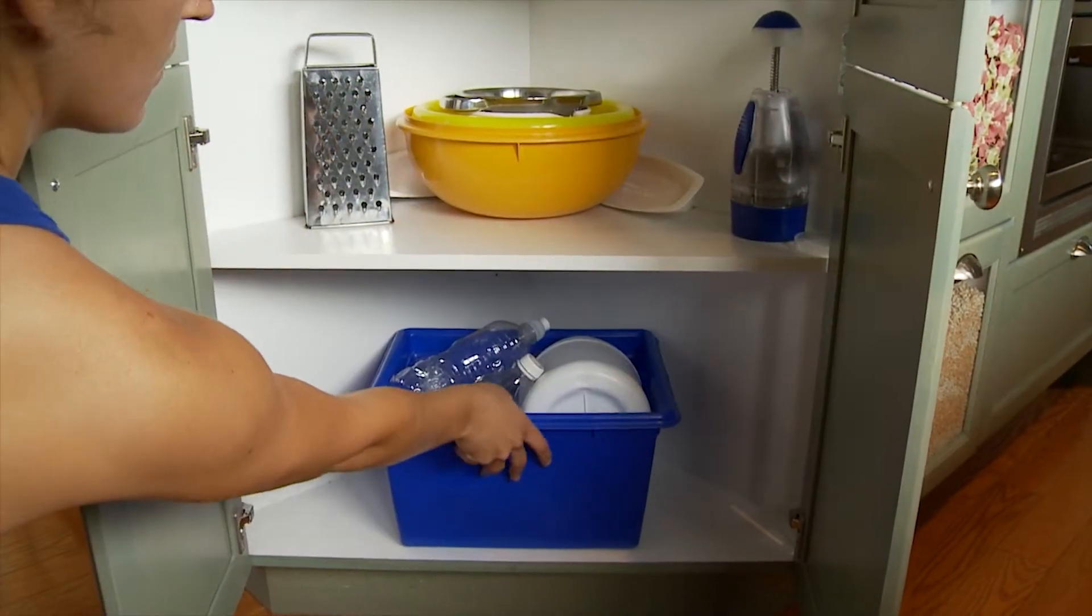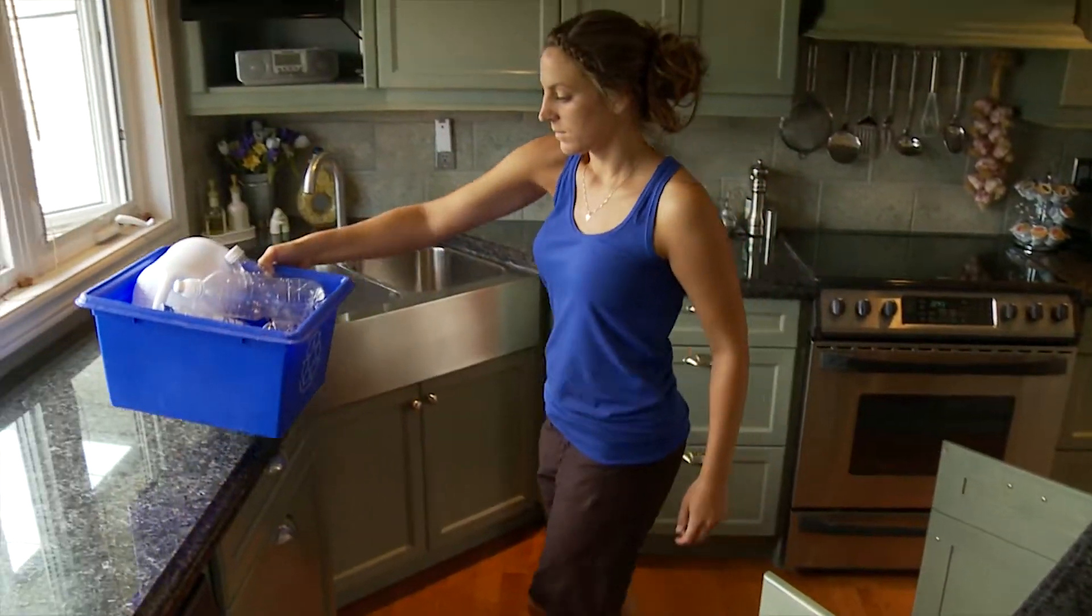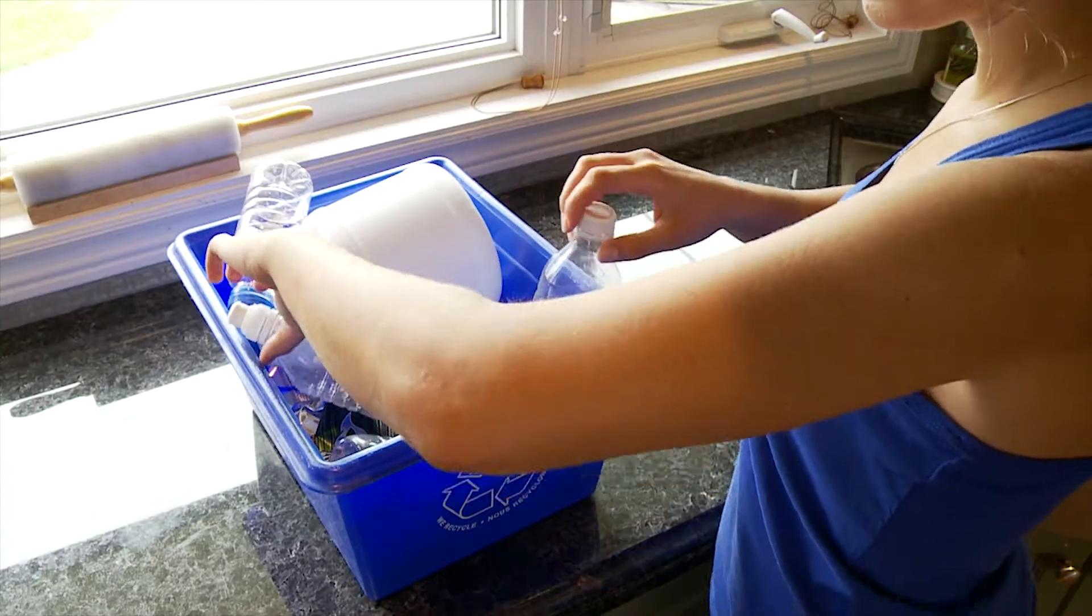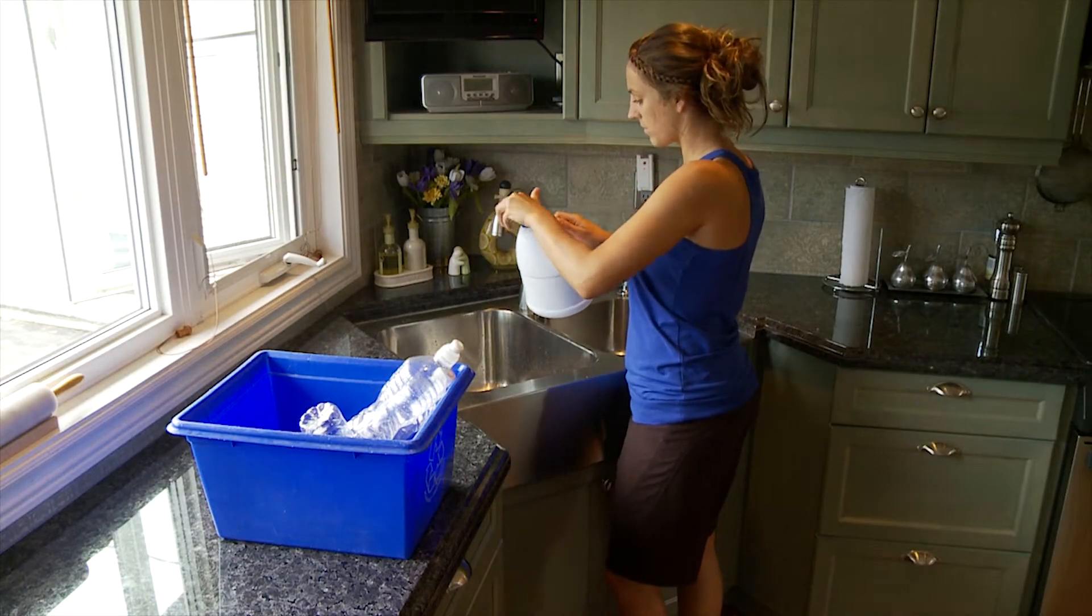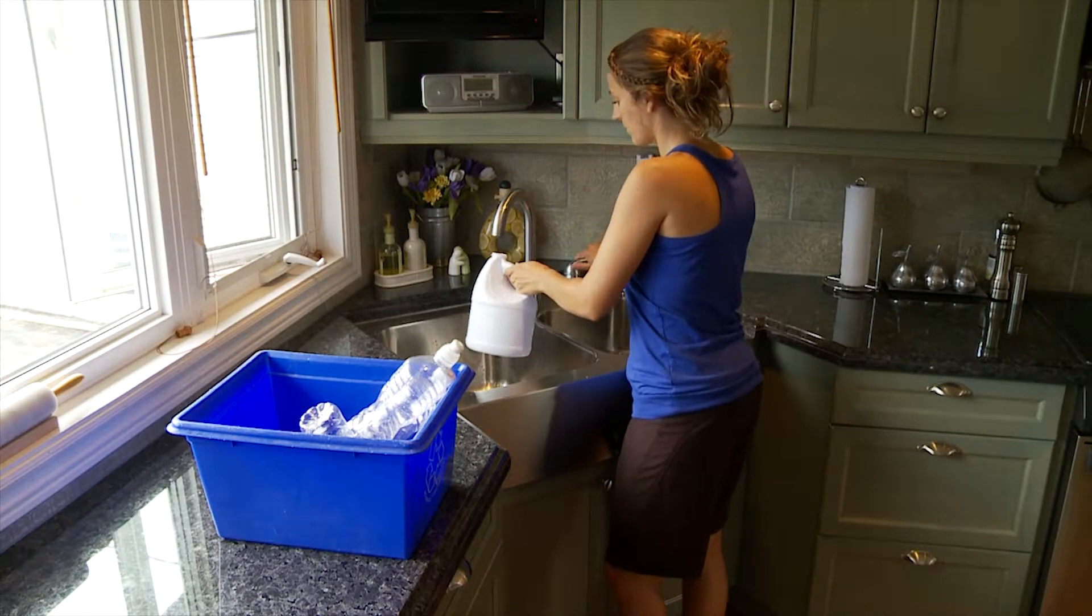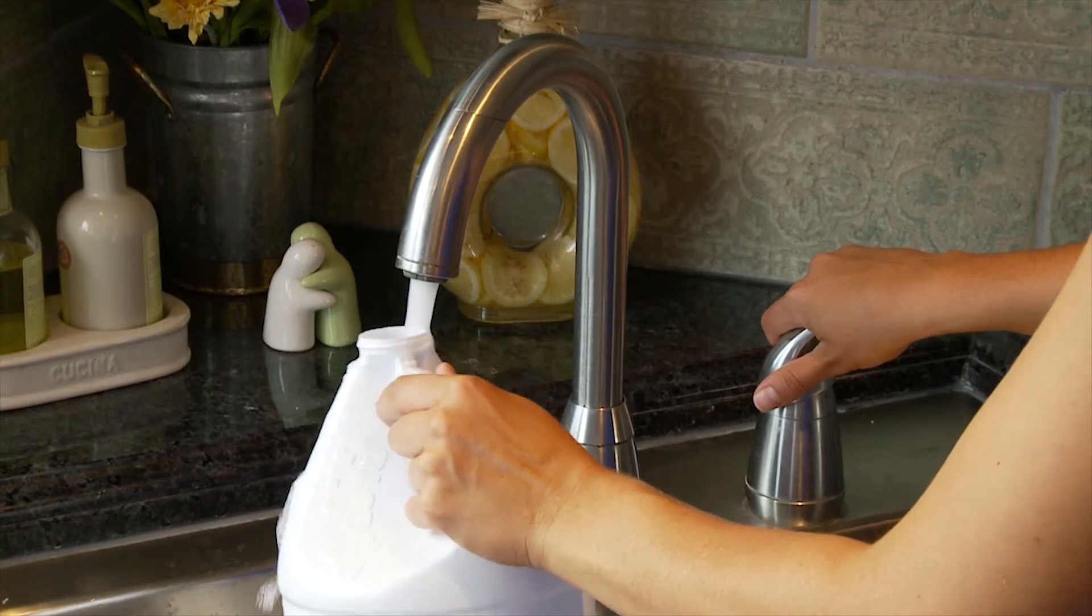Rather than purchasing a bailing bucket, one can be made out of an empty bottle. Select either a plastic detergent or a bleach bottle that holds at least 750ml. Take care to completely rinse the bottle to remove any residual contents.